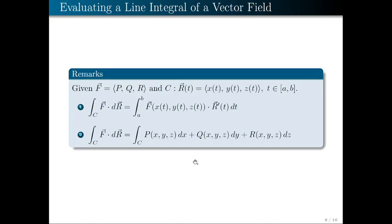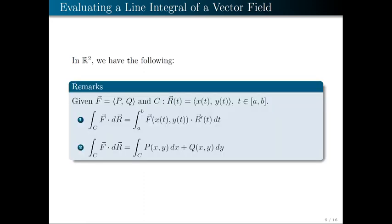Here is a summary of the two ways to evaluate the line integral of a vector field. Given F and parametrization of curve C with t increasing from initial to terminal point, ∫_C F · dr can be written as the definite integral ∫_a^b F(r(t)) · r'(t)dt, or as the sum ∫_C P dx + Q dy + R dz. For R², the same methods apply, just restricted to two dimensions.